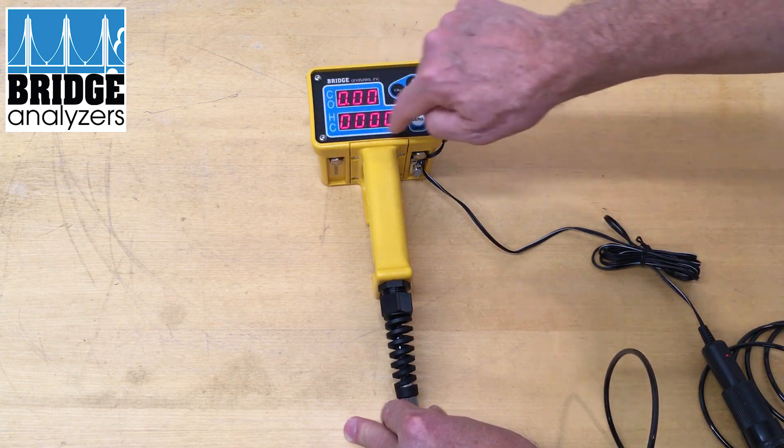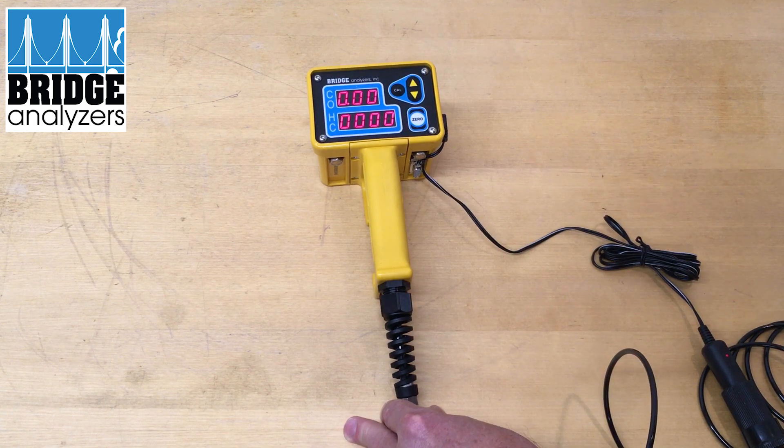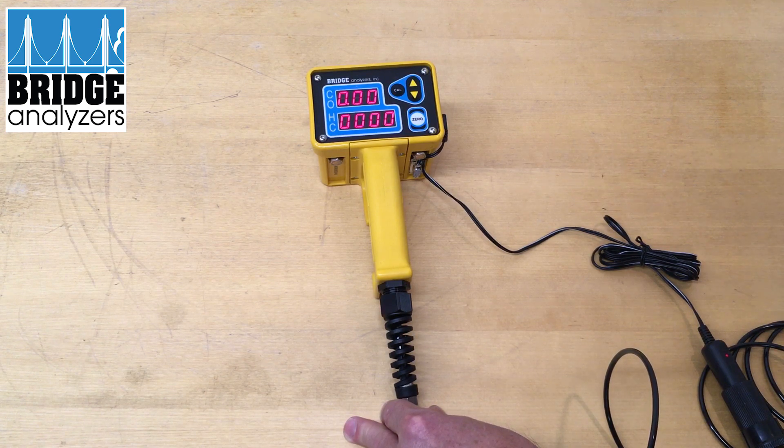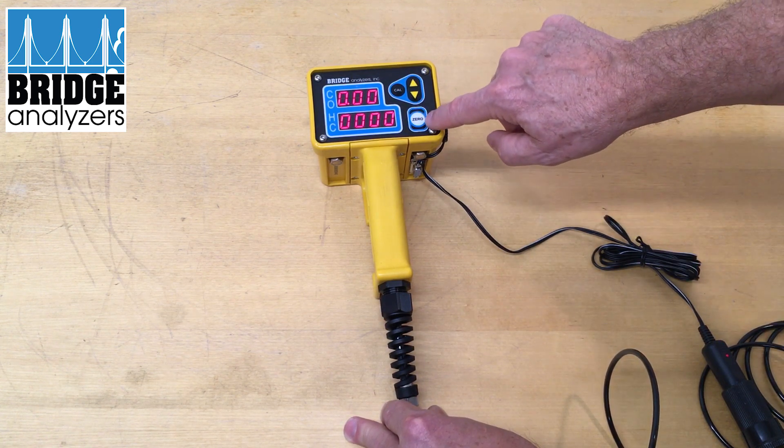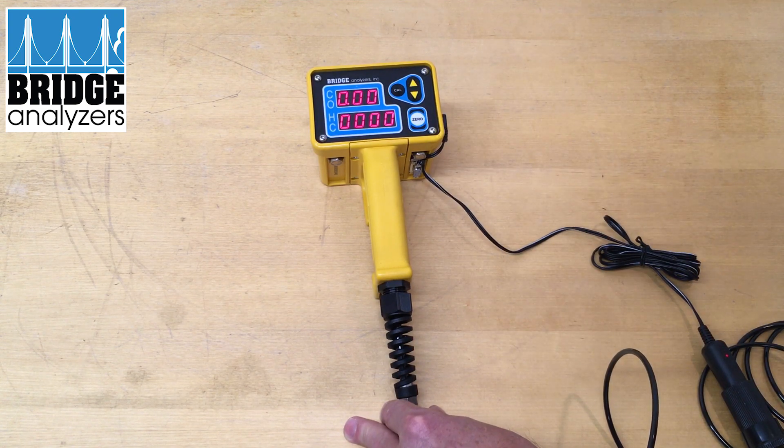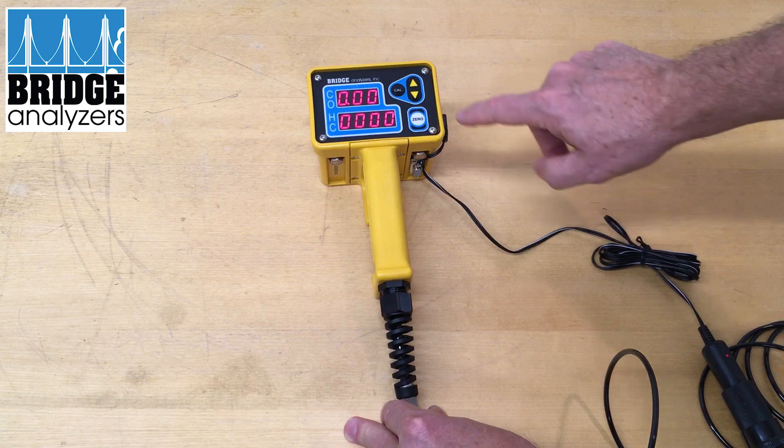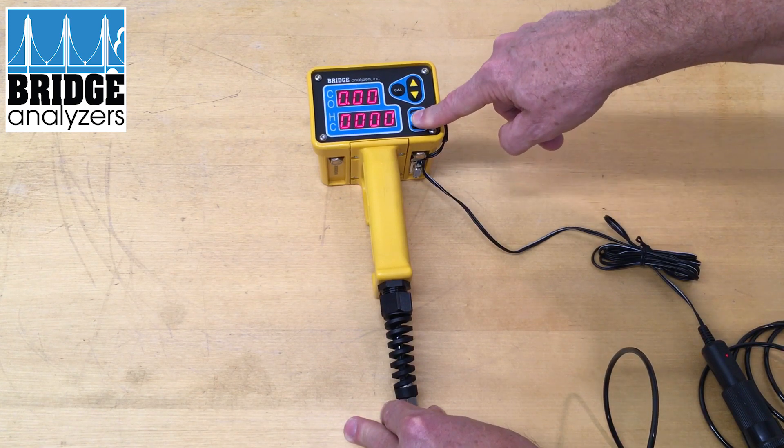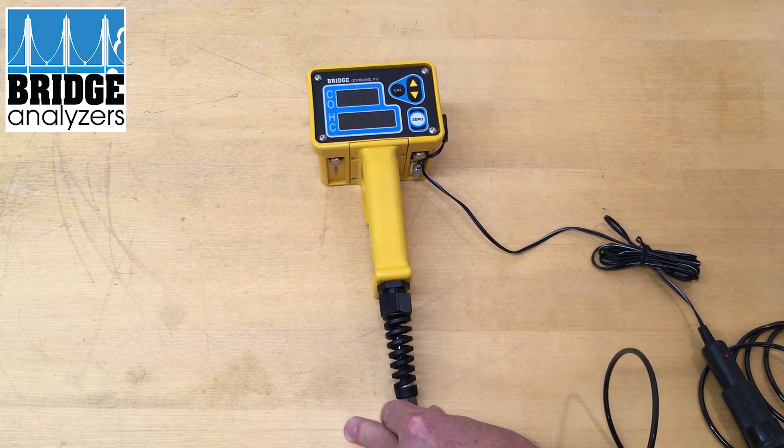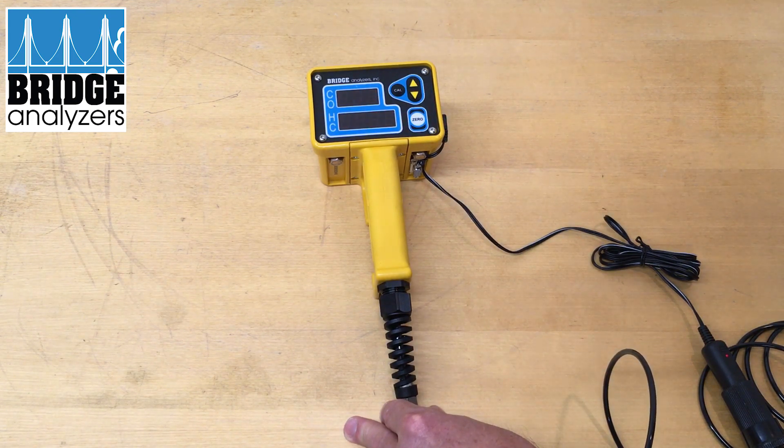Occasionally when this screen blinks between numbers and dashes that indicates that the analyzer is looking to be zeroed again, and that will occur after five minutes of being turned on and then every 60 minutes thereafter. To activate a zero you would just press this zero button again and it'll do the zero routine.